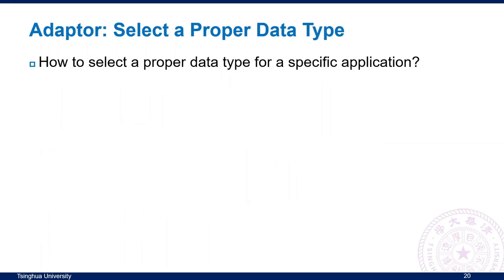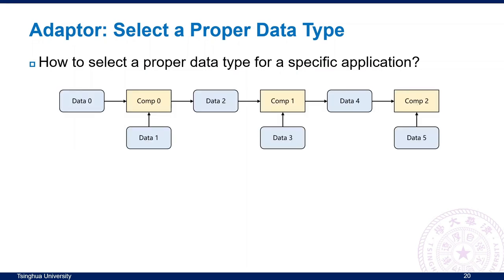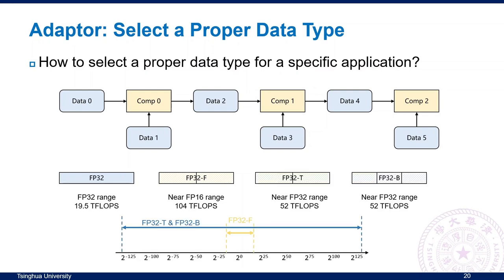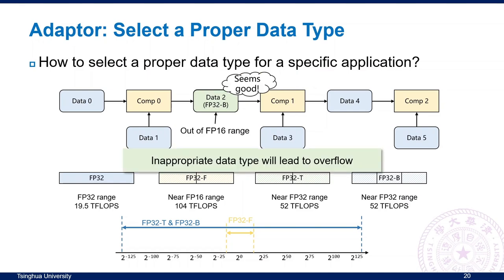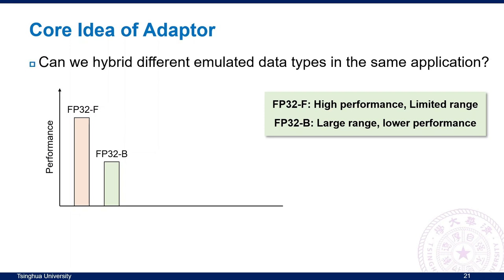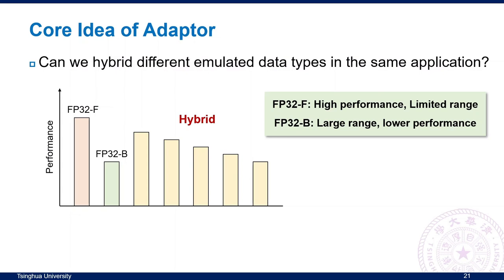The second challenge is how to select a proper data type for a specific application. Given a specific computation, we have candidate types including native FP32, FP32F, FP32T, and FP32B. They have similar precision but various ranges. If data is out of FP16 range and we use FP32F to compute it, overflow will occur, so we must use FP32B or FP32T. While using FP32B for all computations avoids overflow, FP32F has higher performance. So can we hybrid different emulated data types in the same application to achieve higher performance without overflow?